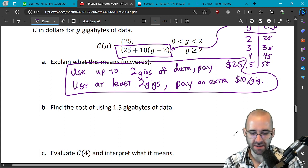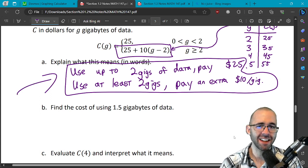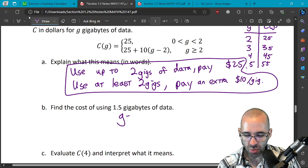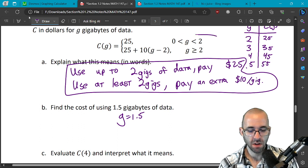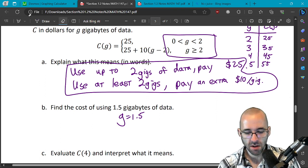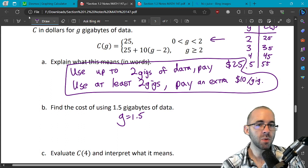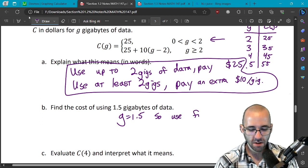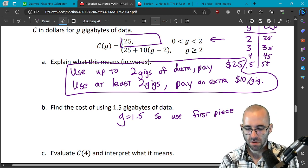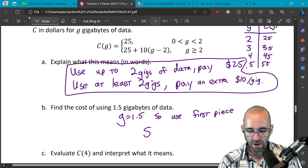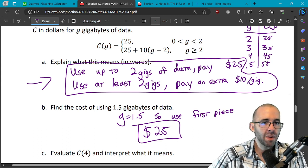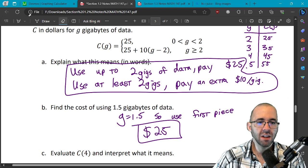Let's find the cost of using 1.5 gigs of data. Well we can just use what we boxed here to get the answer, but let's get practice with piecewise functions. So if g is 1.5, which piece do we use? Which one of these inequalities does 1.5 lie in? The answer is going to be this one. 1.5 is between 0 and 2, so you use the first piece. First piece is always $25. That's going to be our answer. Cost $25. Which again agrees with what we wrote here. If you use up to 2 gigs you're paying $25. We used 1.5 gigs, yeah pay $25.